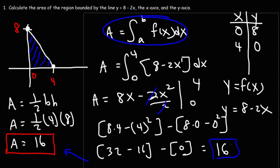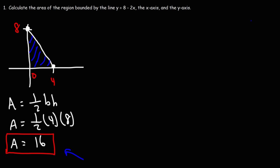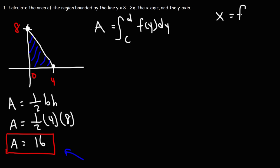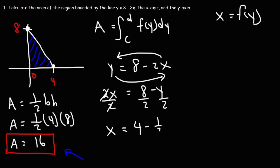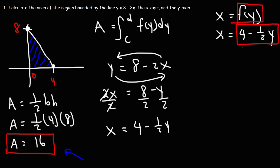We can also get the same answer in terms of y. We need to solve for x: starting from y equals 8 minus 2x, rearranging gives x equals 4 minus one-half y. So f of y equals 4 minus one-half y. We'll integrate from c to d, which is 0 to 8.